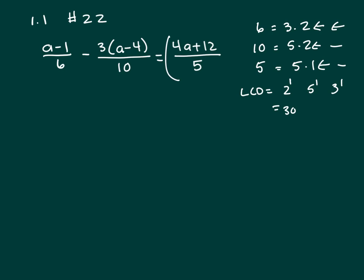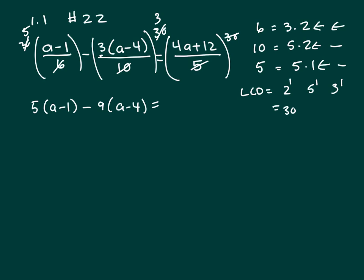So you're going to multiply every term on both sides by 30. 6 will go into 30 5 times, so that's 5 times a minus 1 minus. 10 will go into 30 3 times, 3 times 3 is 9 times an a minus 4. 5 will go into 30 6 times, that's 6 times 4a plus 12.